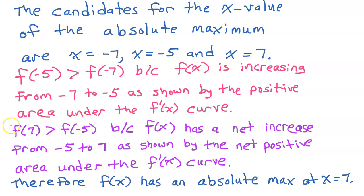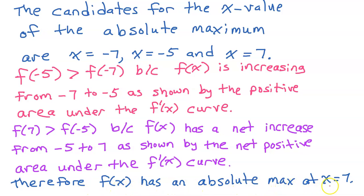Therefore, f at 7 is greater than f at negative 5 because f of x has a net increase from negative 5 to 7, as shown by the net positive area under the f prime curve. Therefore, f of x has an absolute maximum at x equals 7.